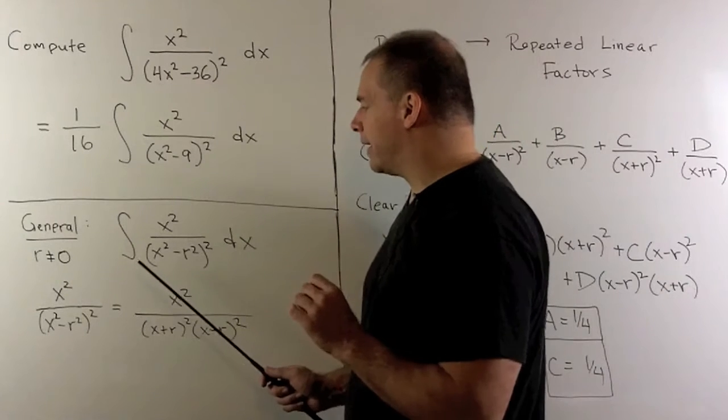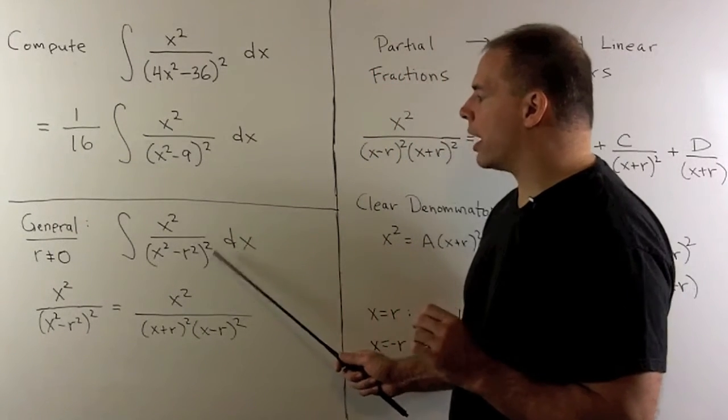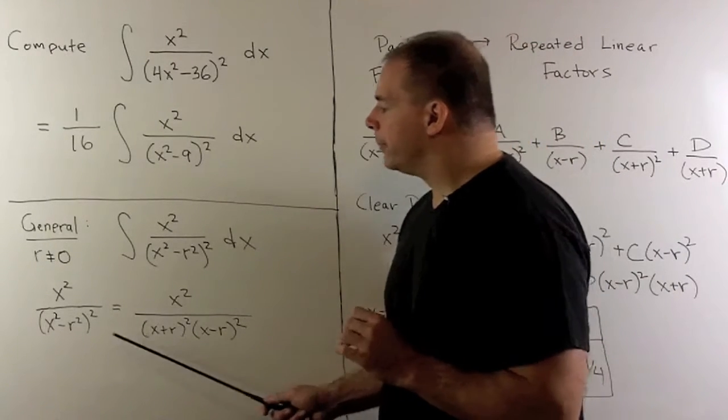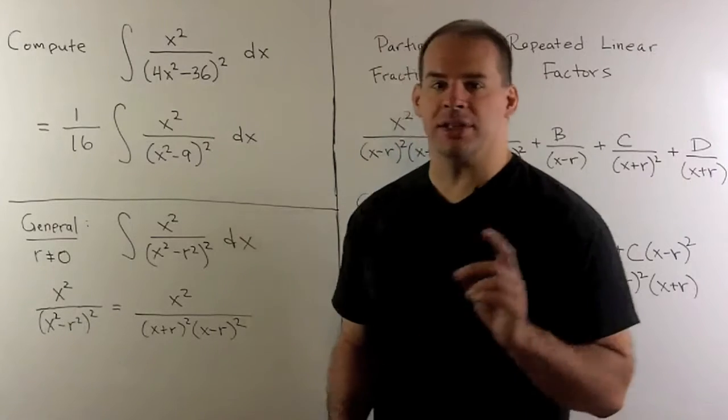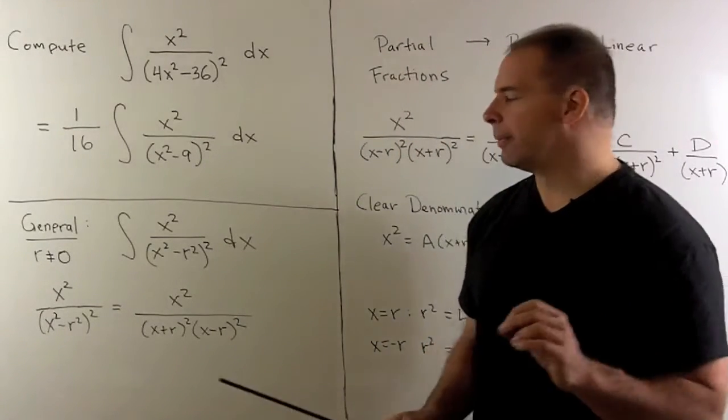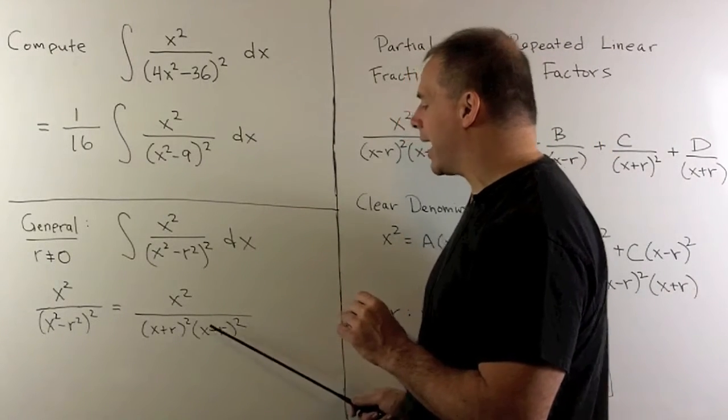That means I'm now looking at the indefinite integral: x squared over x squared minus r squared, quantity squared, with respect to x. Now, you'll note x squared minus r squared is a difference of two squares, so it's x plus r times x minus r. We're really looking at x squared over x plus r squared, x minus r squared.